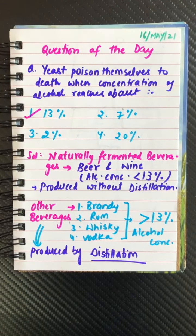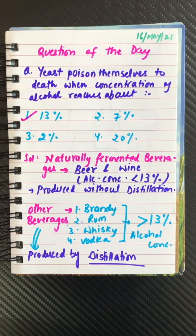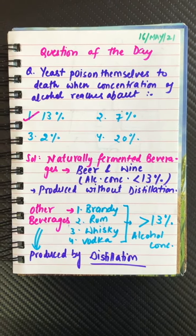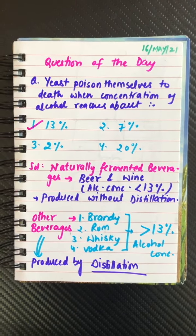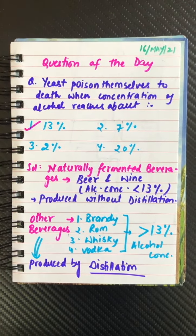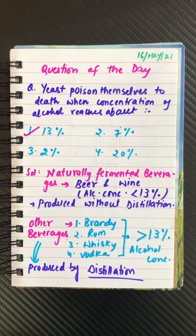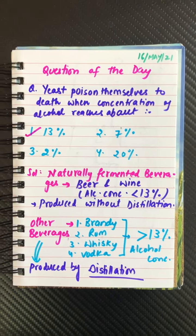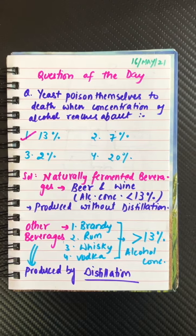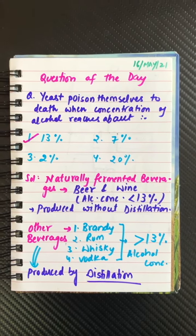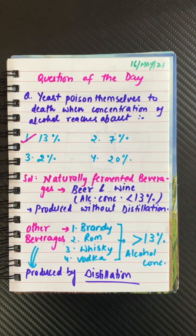Hello students, welcome back to Neat Exam Crack. I hope you all are doing well and you all are fit, fine and healthy. So today's question of the day is: yeast poison themselves to death when concentration of alcohol reaches about — the options are 13%, 7%, 2%, and 20%.